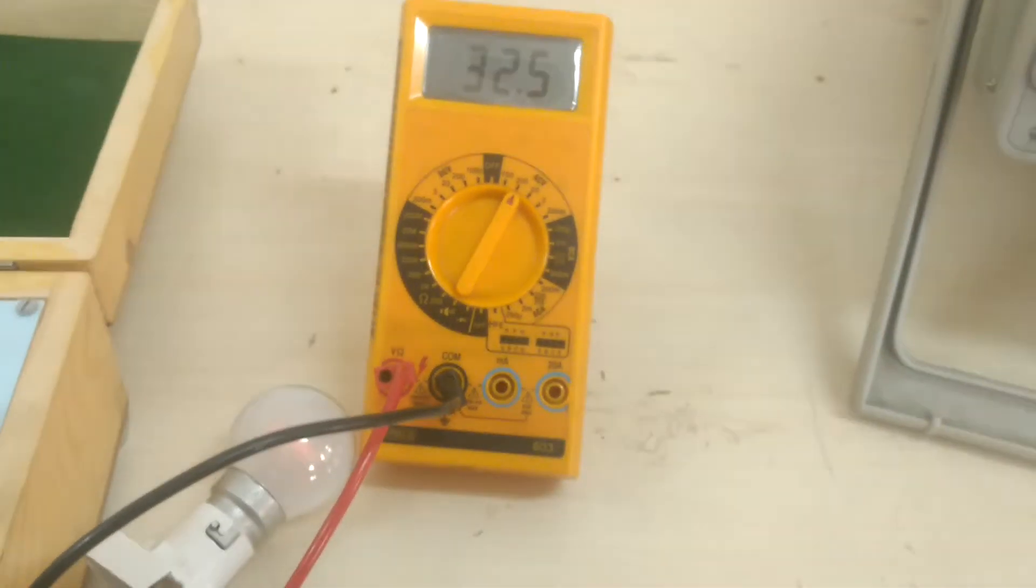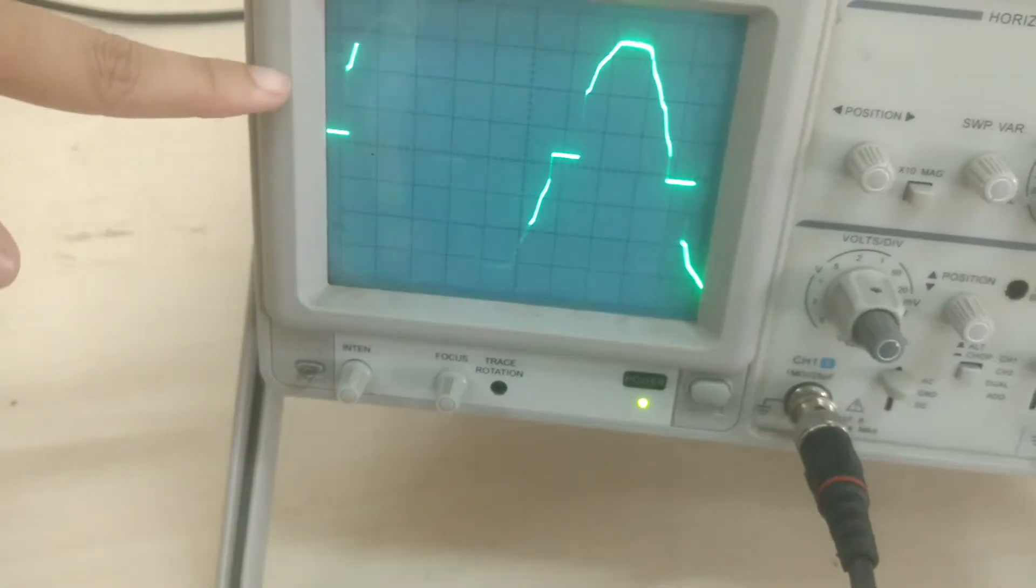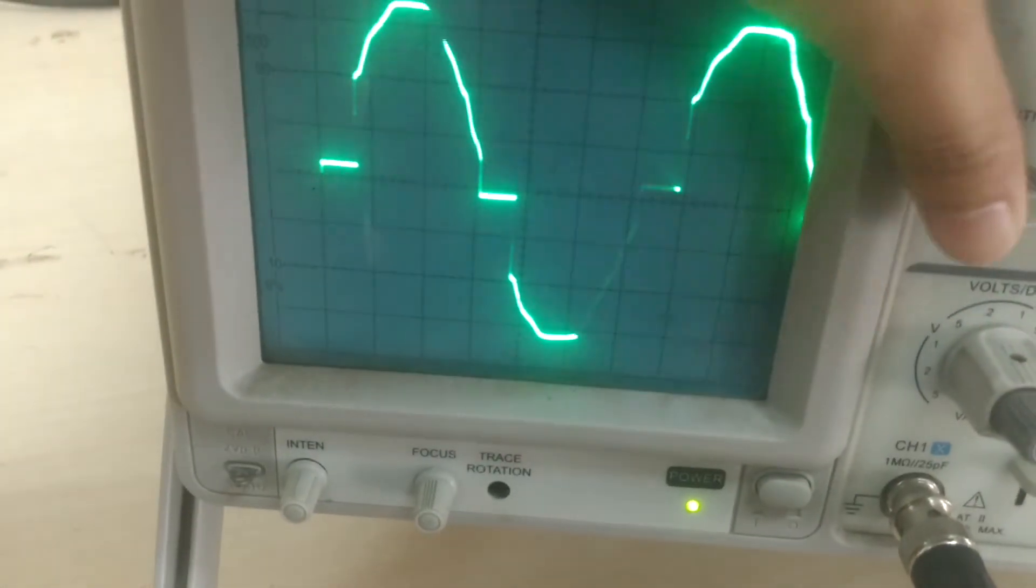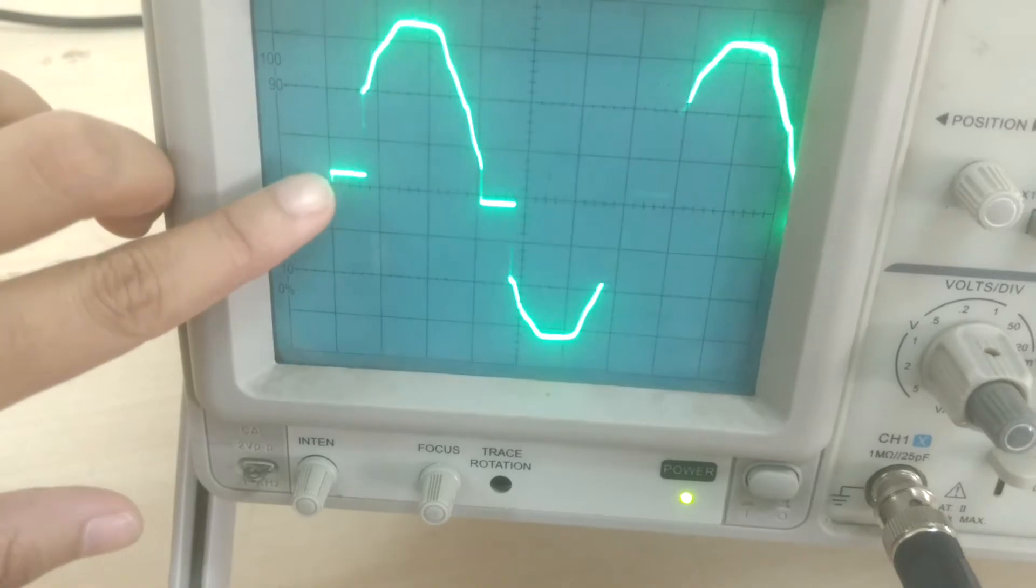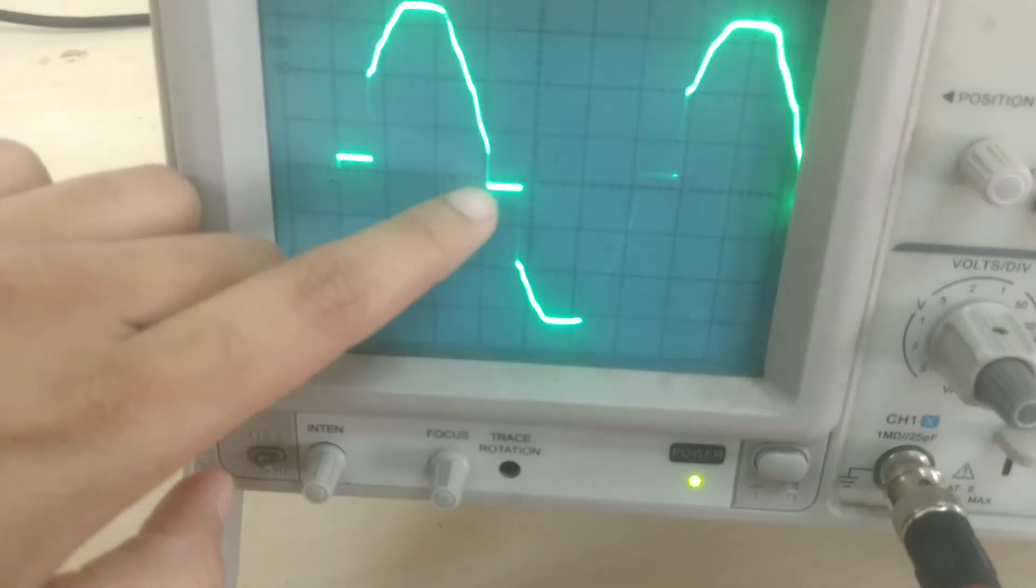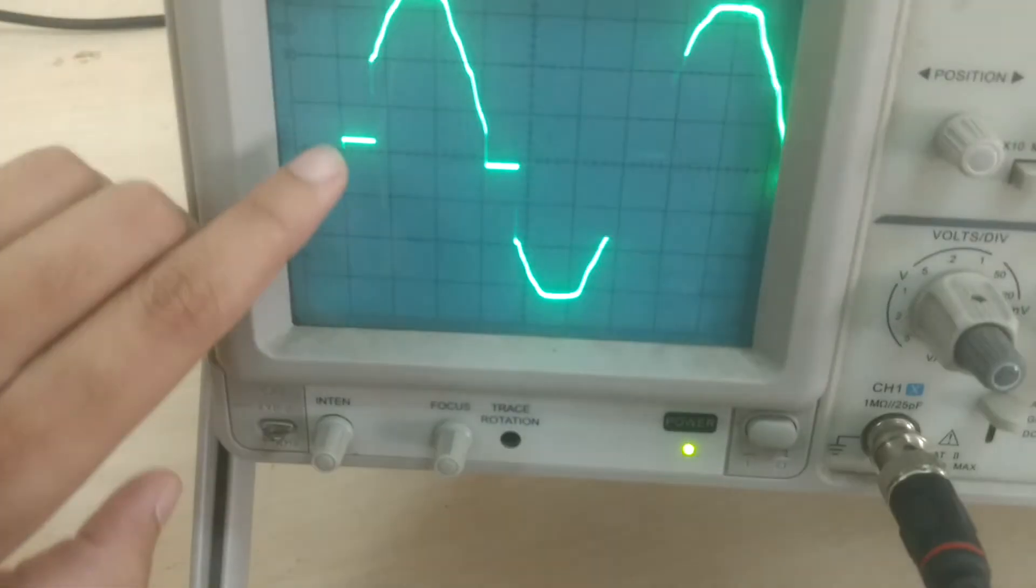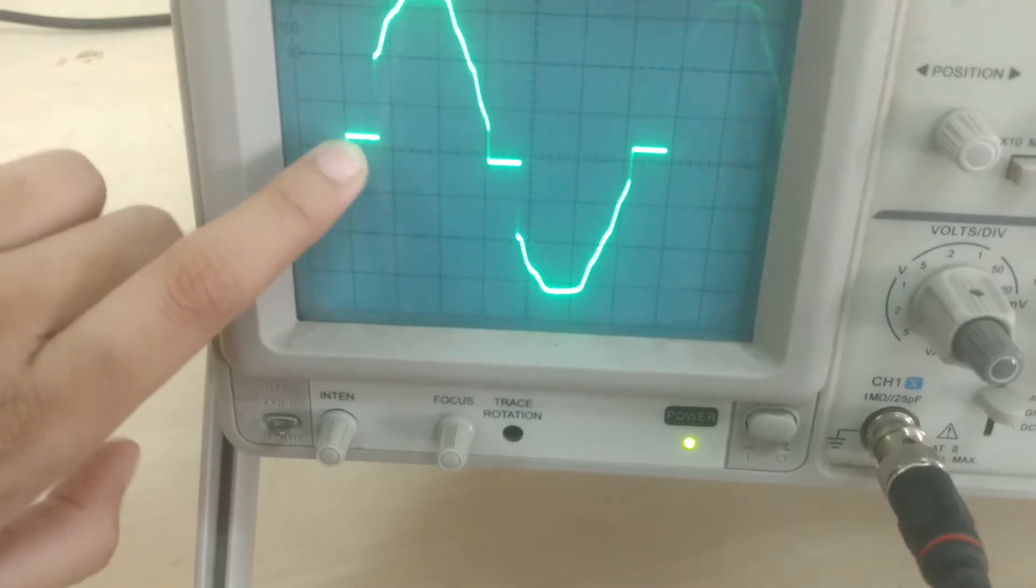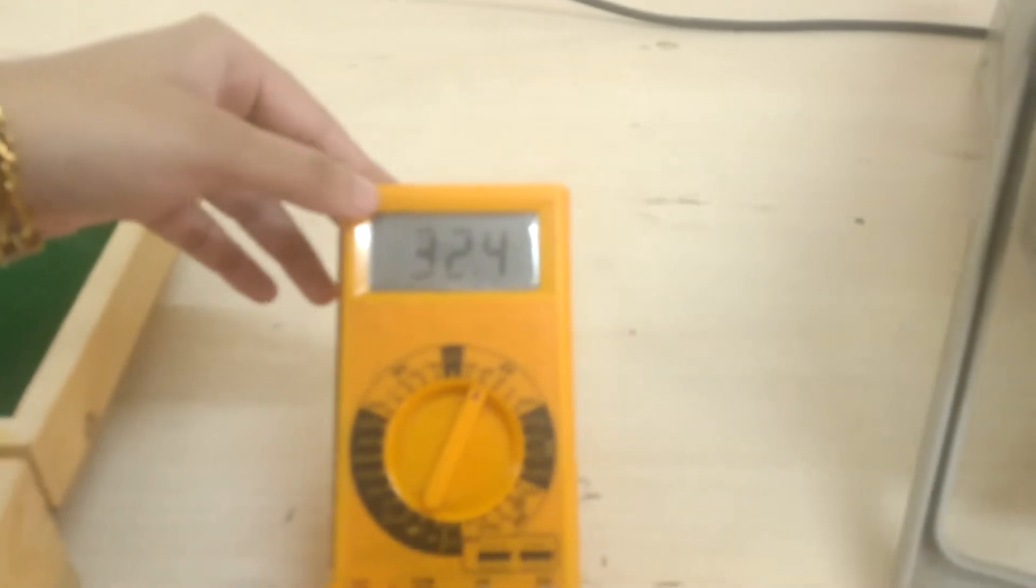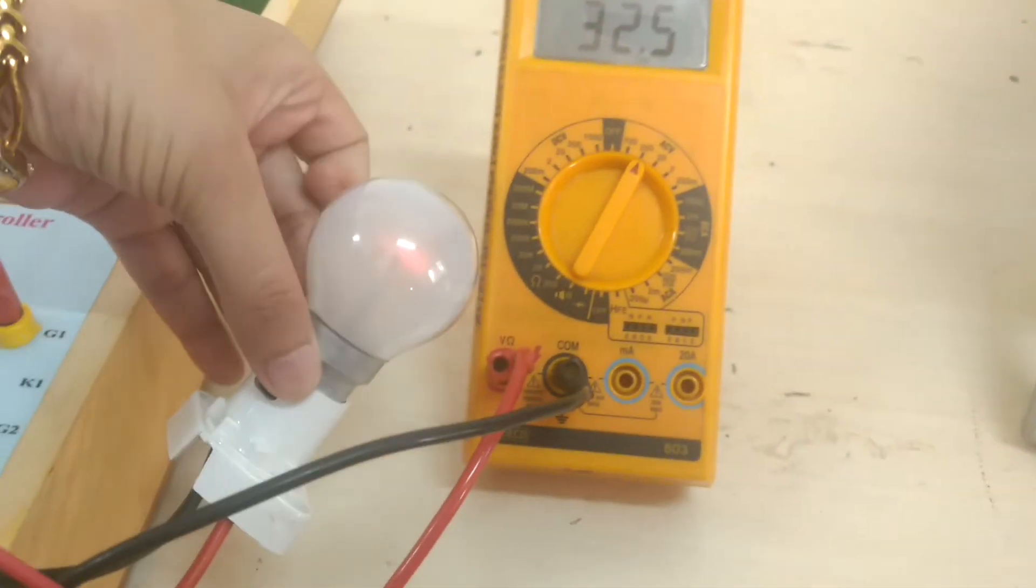Now at the first alpha, our output waveform is like this. During the positive half cycle, it starts from alpha and the positive half cycle is completed. Then T2 waits for pi plus alpha and the negative half cycle conducts. This is the current value of alpha. For this value of alpha, the output voltage is 32.4 volts and brightness of the lamp is also high.